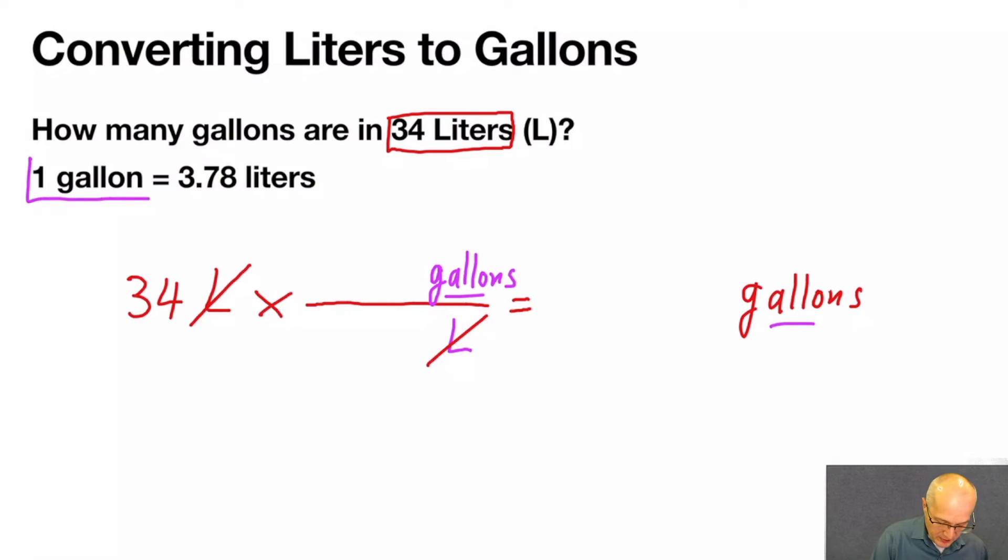We have an equality that relates gallons to liters. So, one gallon is 3.78 liters.